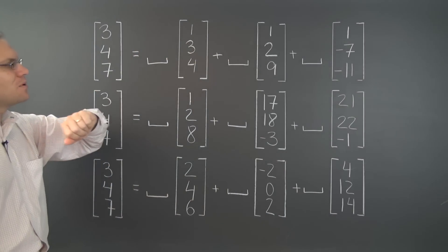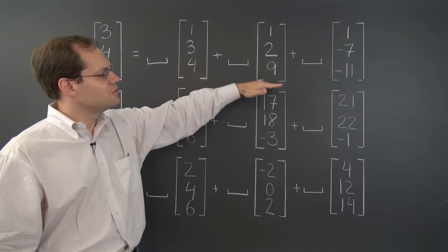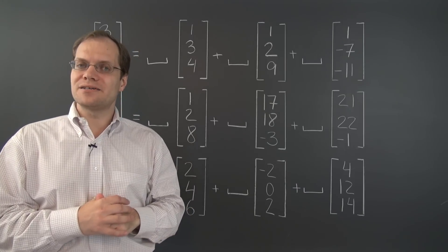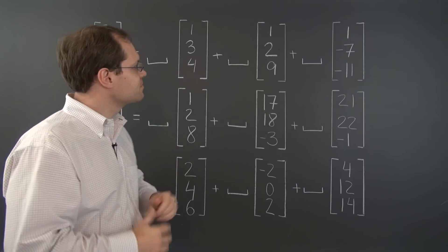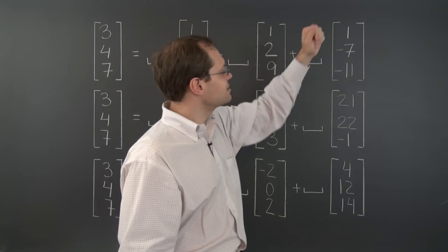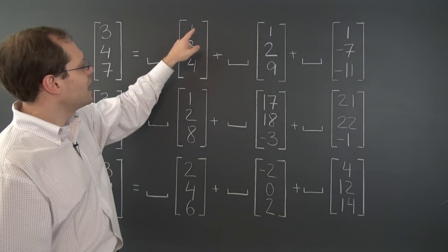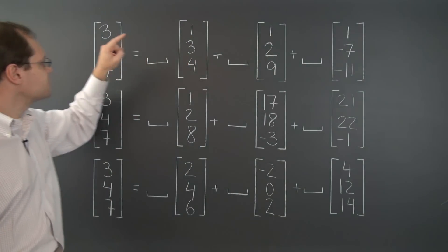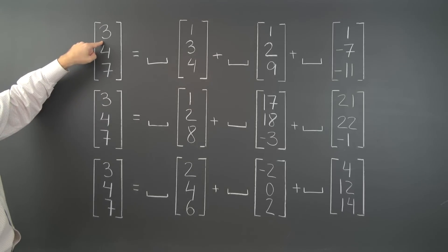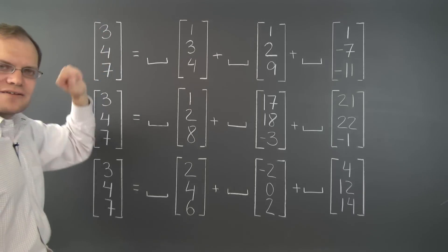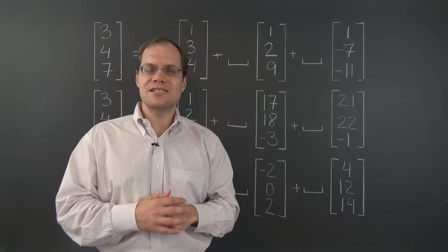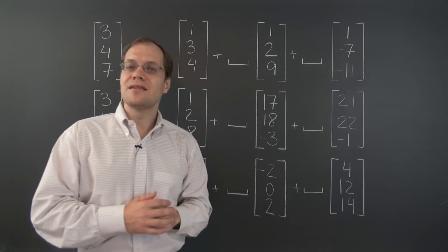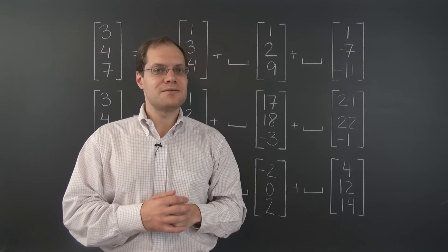Here is my attempt number one at convincing you that this first decomposition problem is not possible. Notice that all of the vectors on the right-hand side — the decomposition vectors — have 1s as their first entries. Yet the target vector has a 3 here, not 1. And because the target vector does not satisfy the same property that these decomposition vectors share, this decomposition problem is impossible.